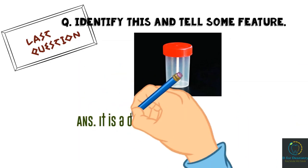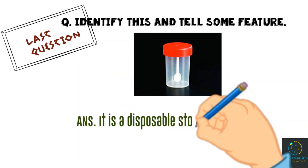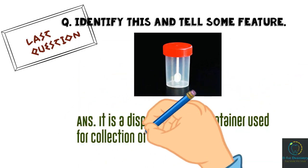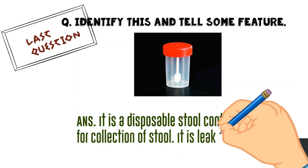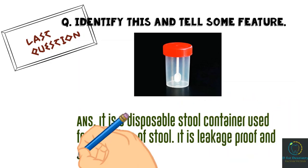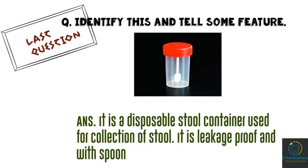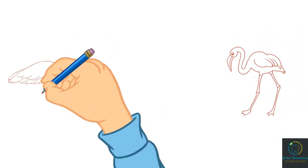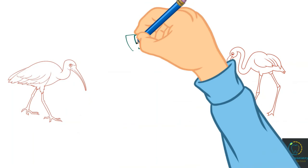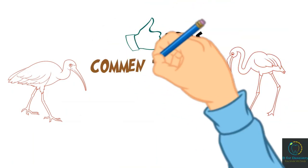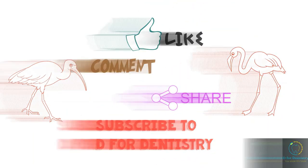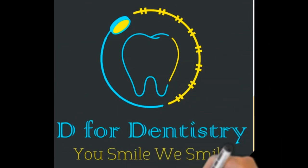Last question: Identify this and tell some features. It is a disposable stool container used for collection of stool. It is leakage-proof and comes with a spoon. That was all about stool examination. Stay connected, thank you for watching D4 Dentistry.